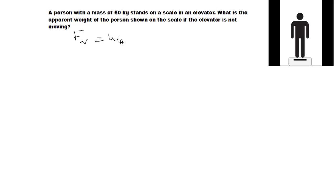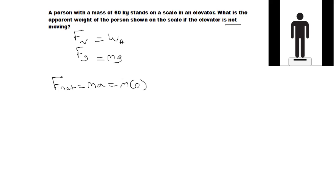Normally your weight is given by the force of gravity, and the force of gravity is mass times gravity. Here we're saying that the elevator is not moving, so let's use Newton's second law: F_net equals mass times acceleration. If we're not moving, the acceleration is going to be zero. Therefore, F_net equals mass times zero, which equals zero.